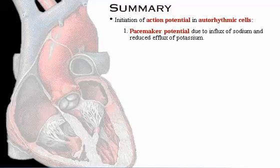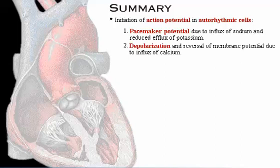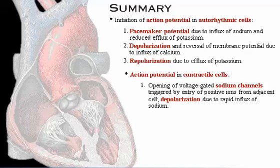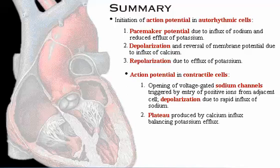Here's a summary of what we've covered. In autorhythmic cells, the pacemaker potential is due to the influx of sodium and reduced efflux of potassium, which triggers an action potential. Depolarization and reversal of the membrane potential is due to a rapid influx of calcium. Repolarization is due to the efflux of potassium. For action potentials in contractile cells, the opening of voltage-gated sodium channels is triggered by the entry of positive ions from an adjacent cell. Depolarization is due to rapid influx of sodium. A plateau is produced by calcium influx, which balances the potassium efflux. Repolarization is due to the rapid efflux of potassium.